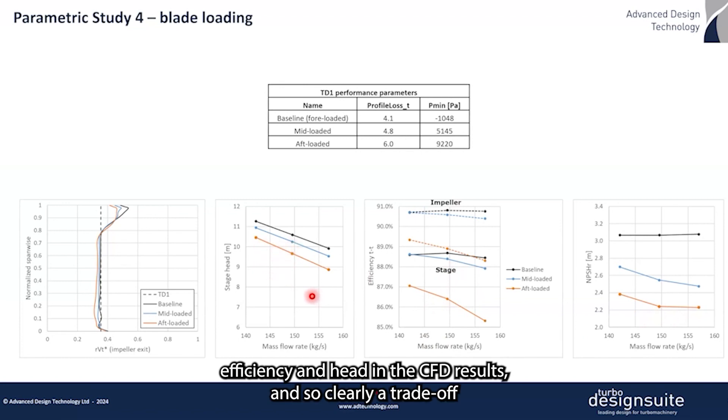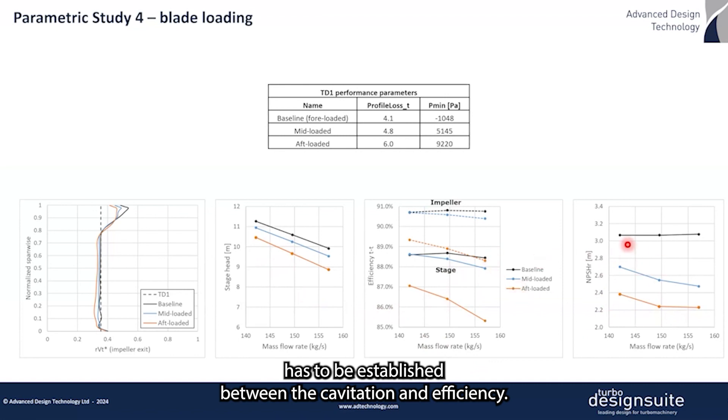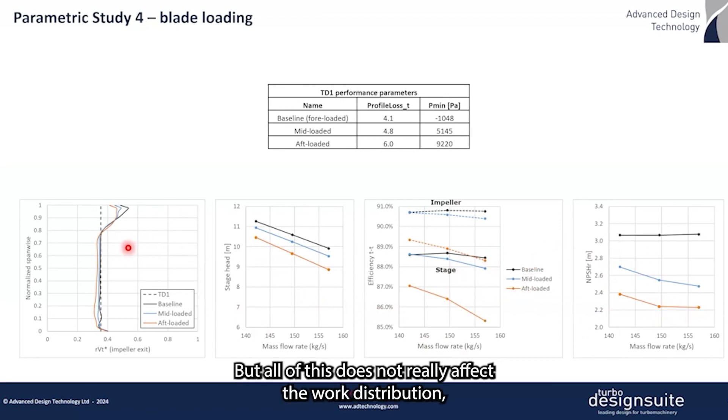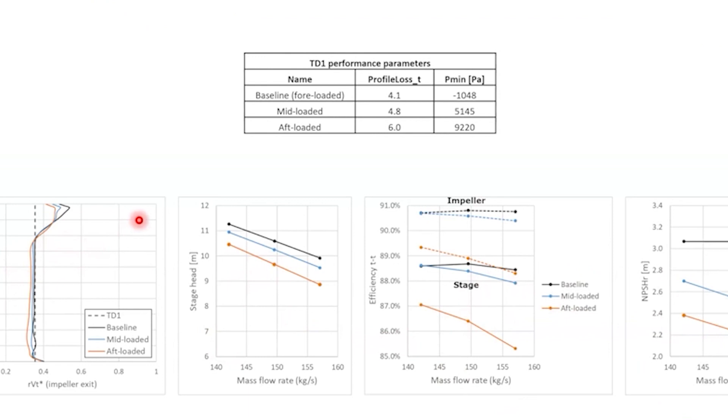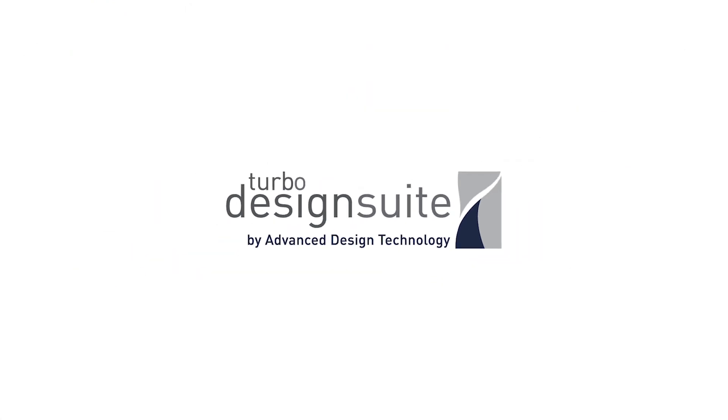Clearly, a trade-off has to be established between cavitation and efficiency. But all of this does not really affect the work distribution, which is still preserved close to the baseline for both configurations.